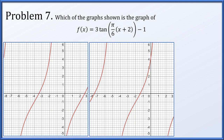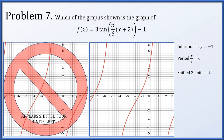Problem 7: identify which of two graphs could be the function f of x equals 3 times the tangent of pi over 6 times the quantity x plus 2 minus 1. The inflection occurs at y equals negative 1, and the period is pi divided by pi over 6, which is 6 — that matches both graphs. However, we want a shift of 2 units to the left, but one graph is shifted 4 units to the left with an inflection at about x equals negative 4, so that one does not match.